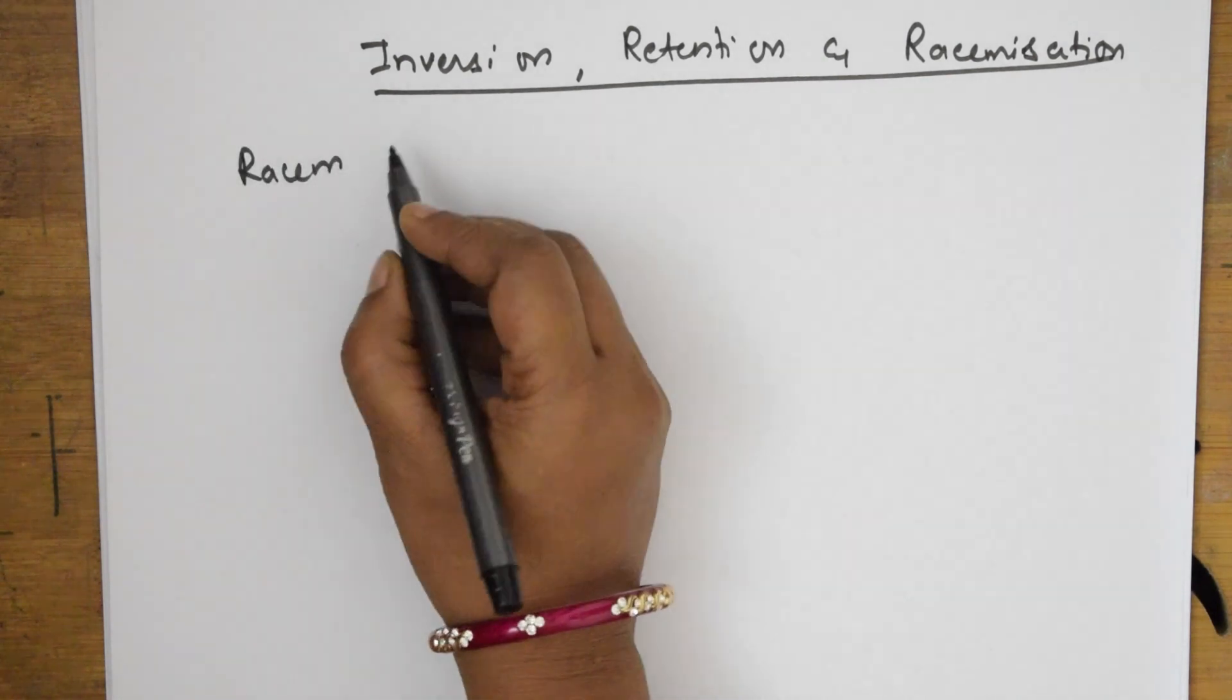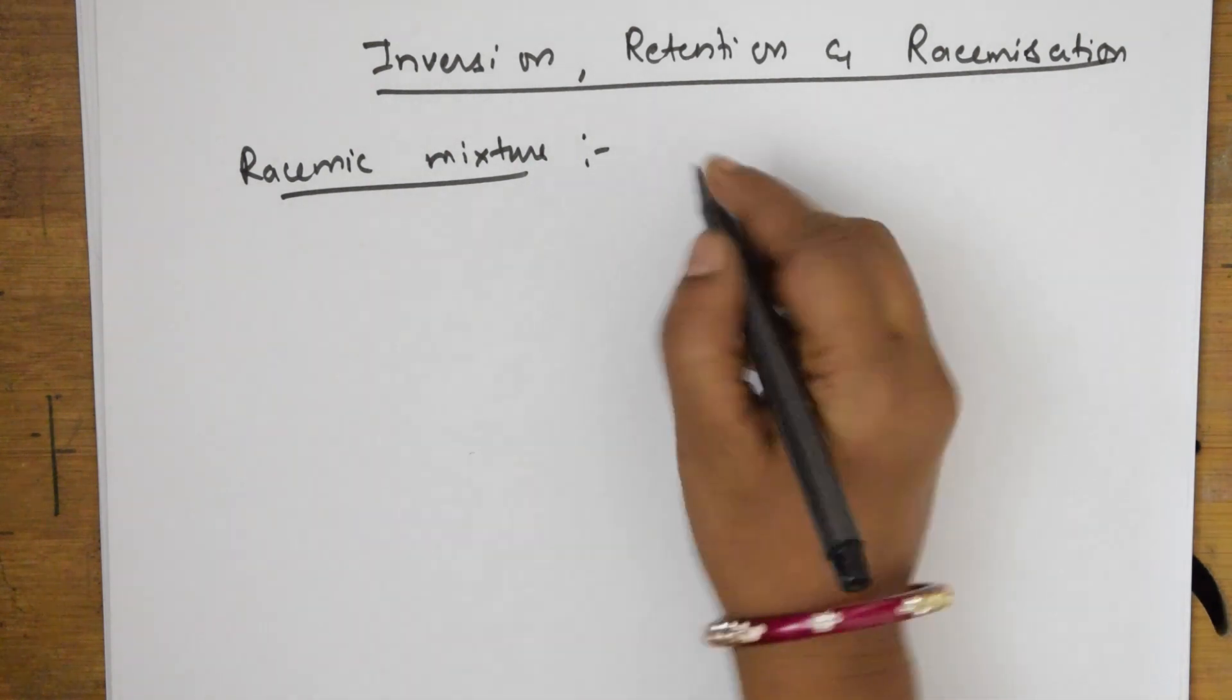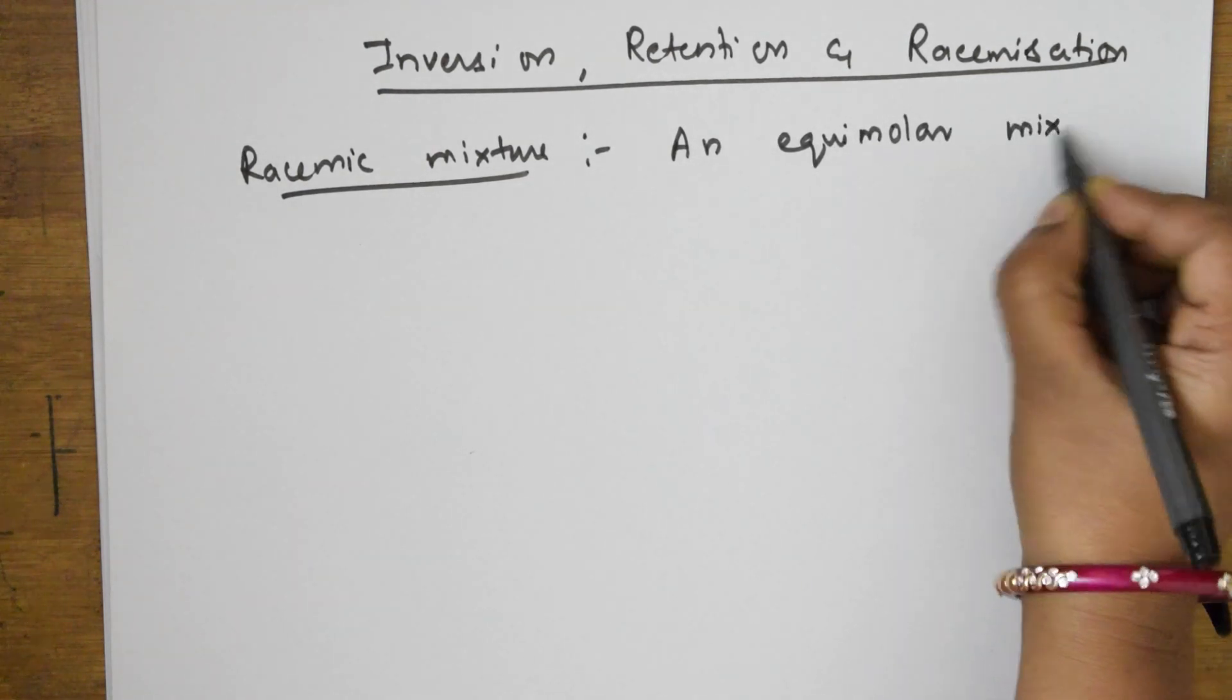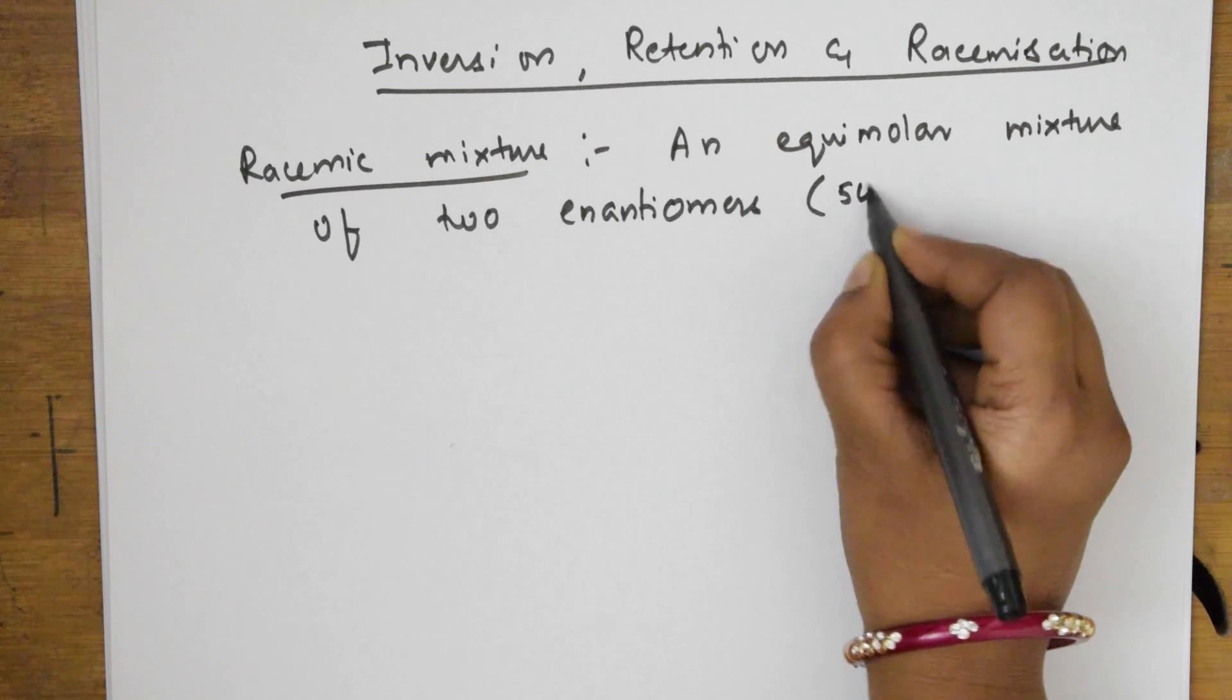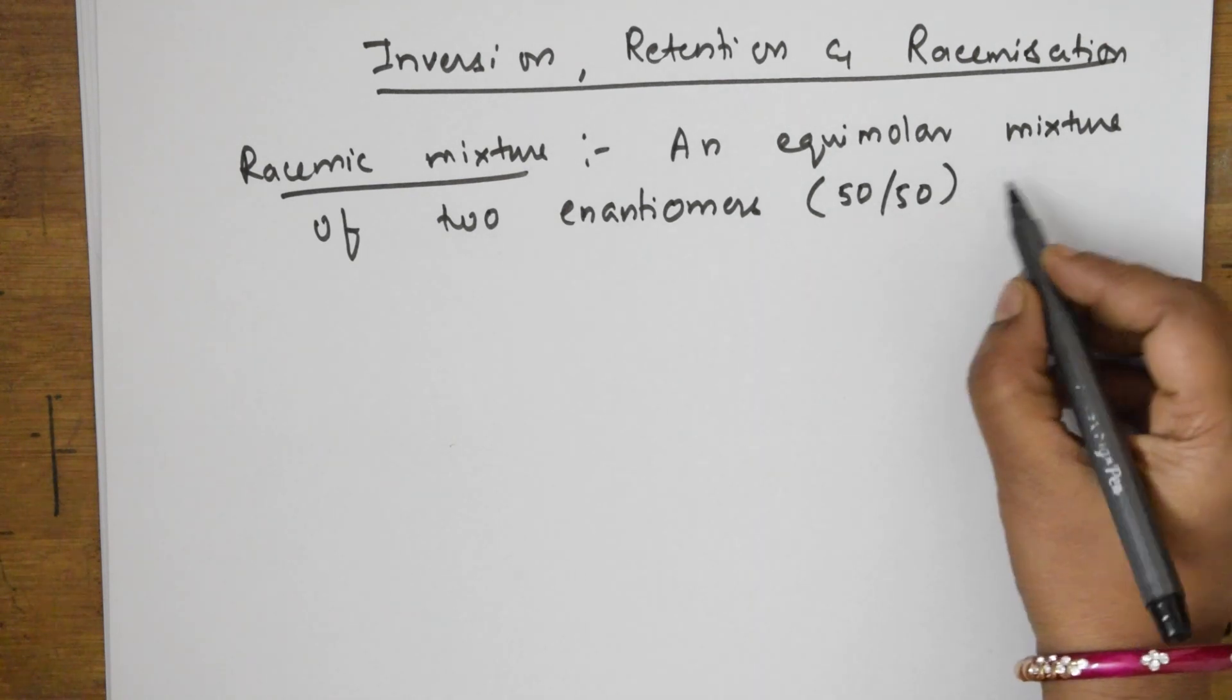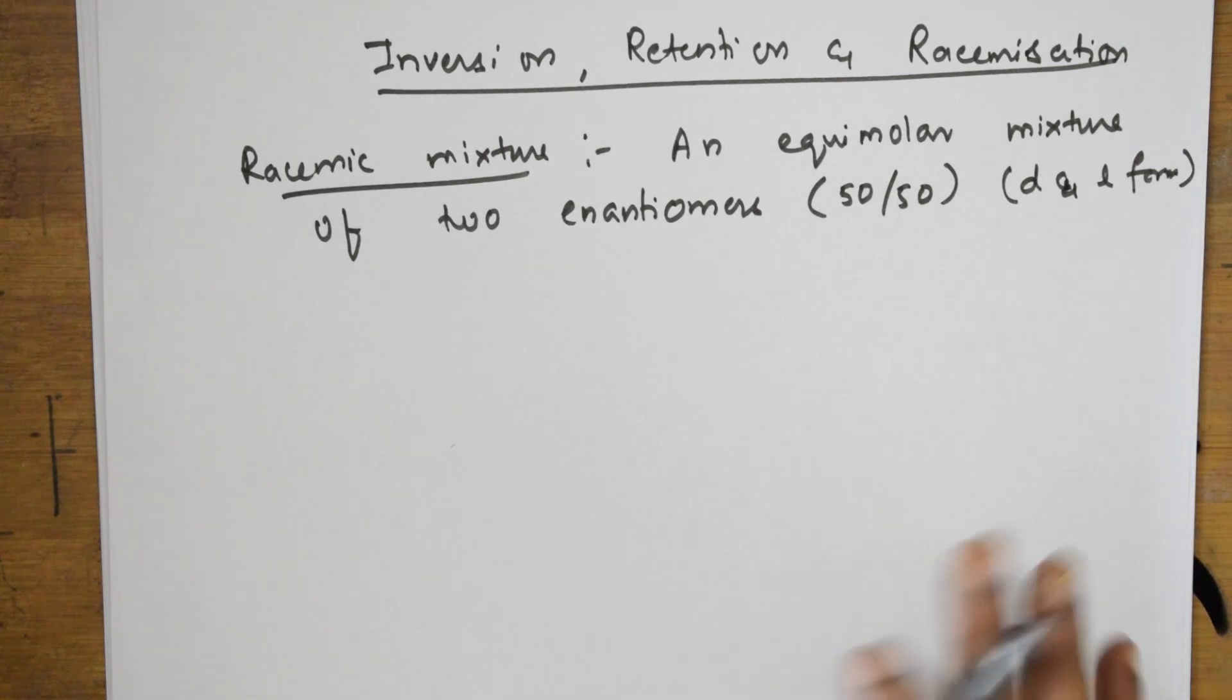Racemic mixture is basically an equimolar mixture 50 by 50, 1 is to 1 ratio of enantiomers. An equimolar mixture of 2 enantiomers, both D form and L form, that is dextro and levo, where they rotate the plane polarized light towards right as well as left.